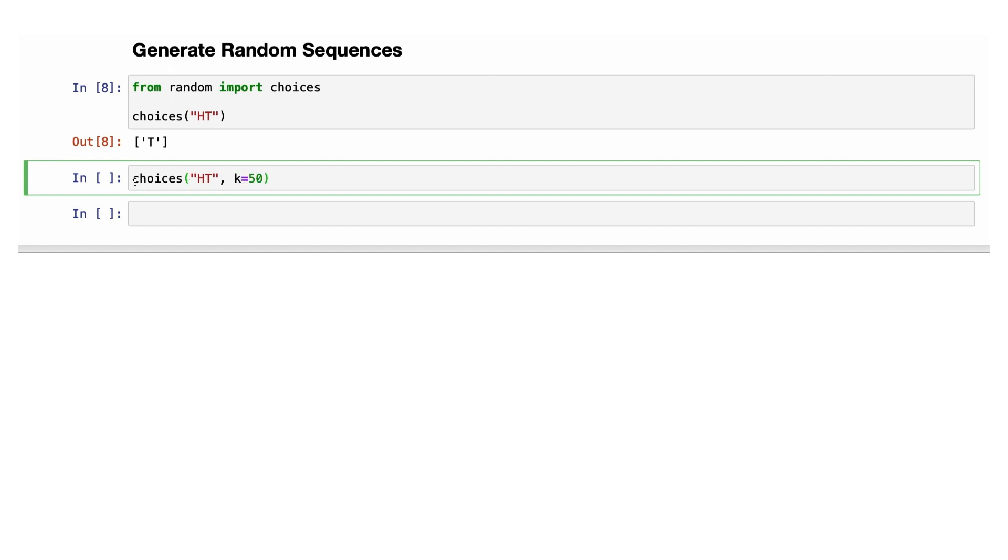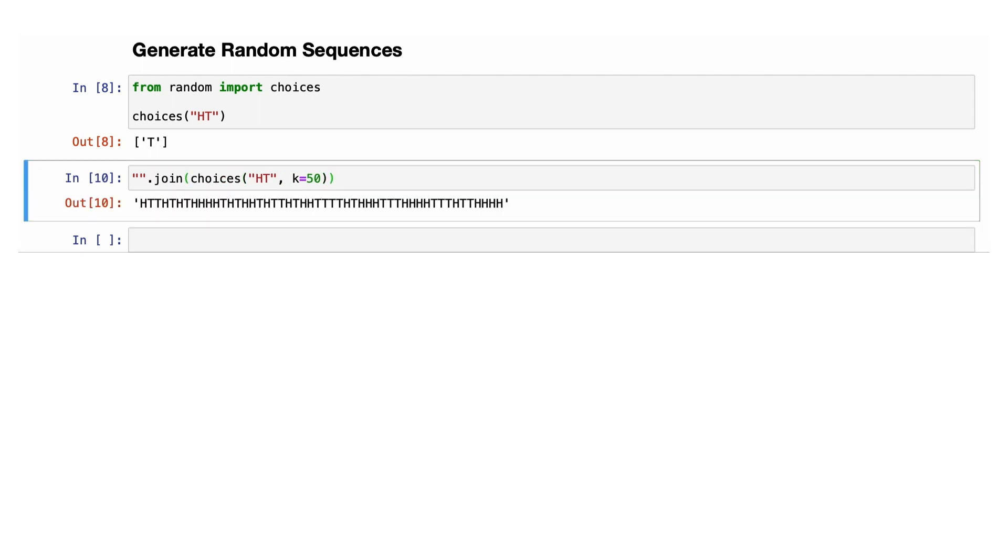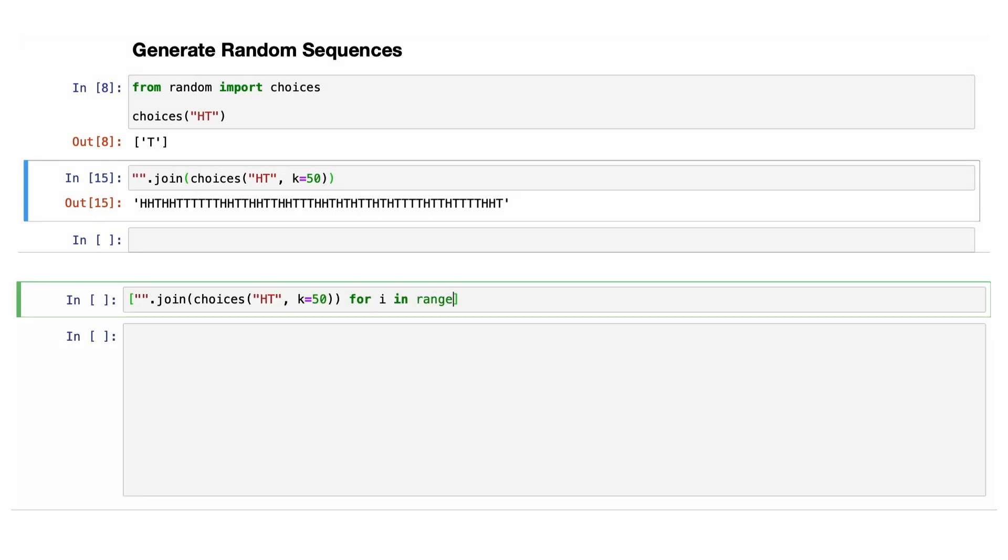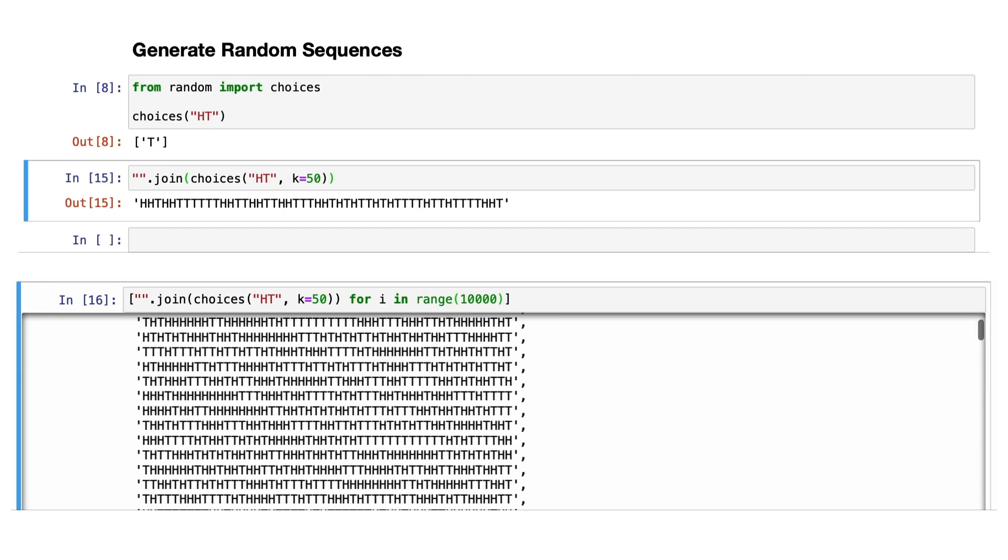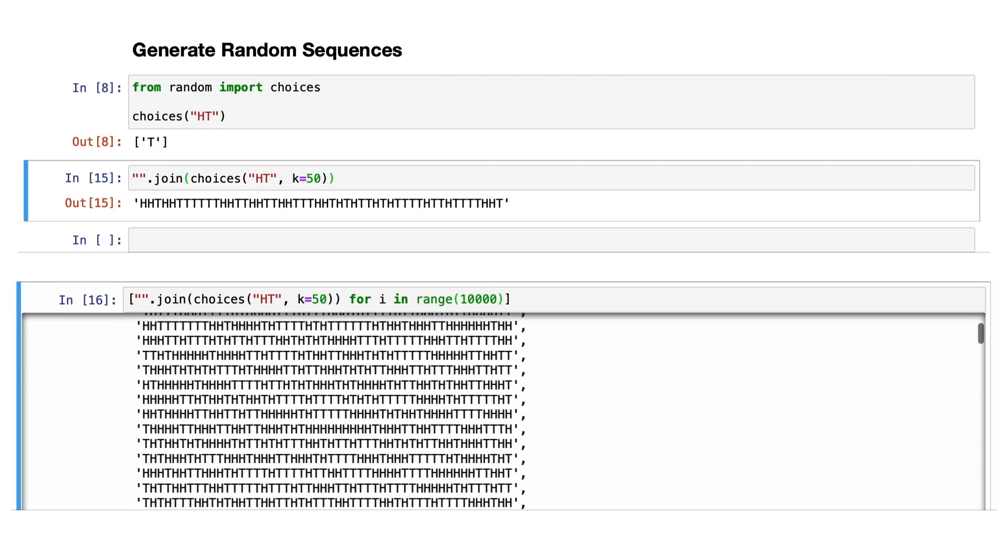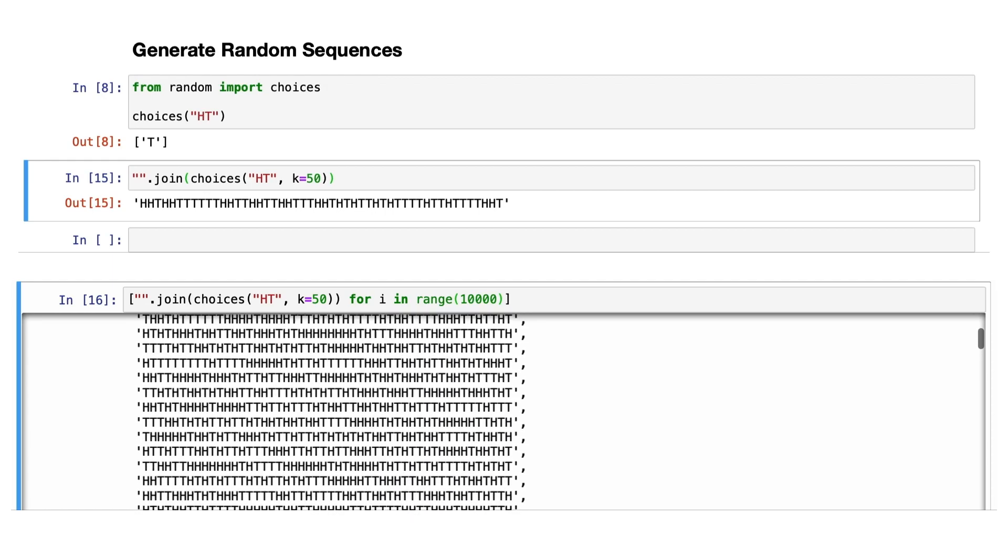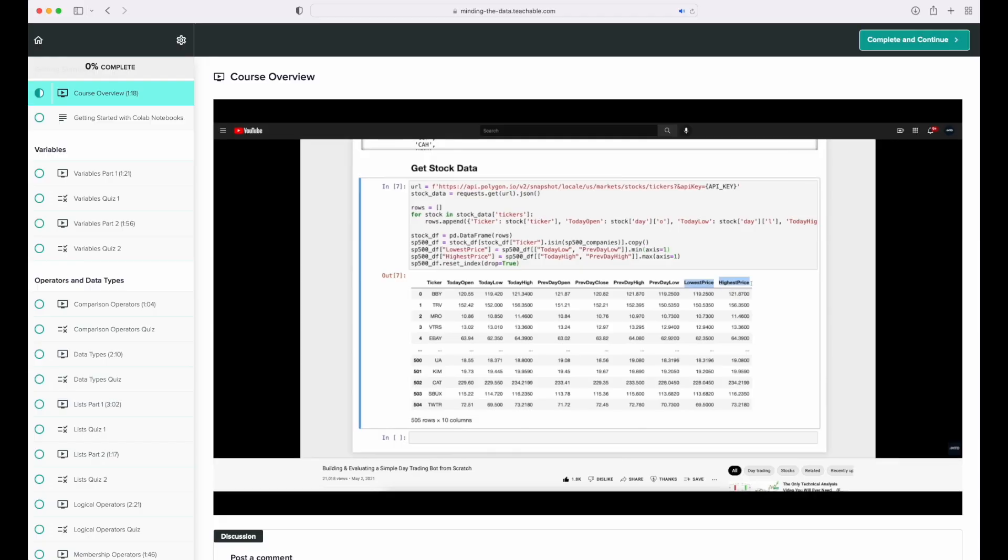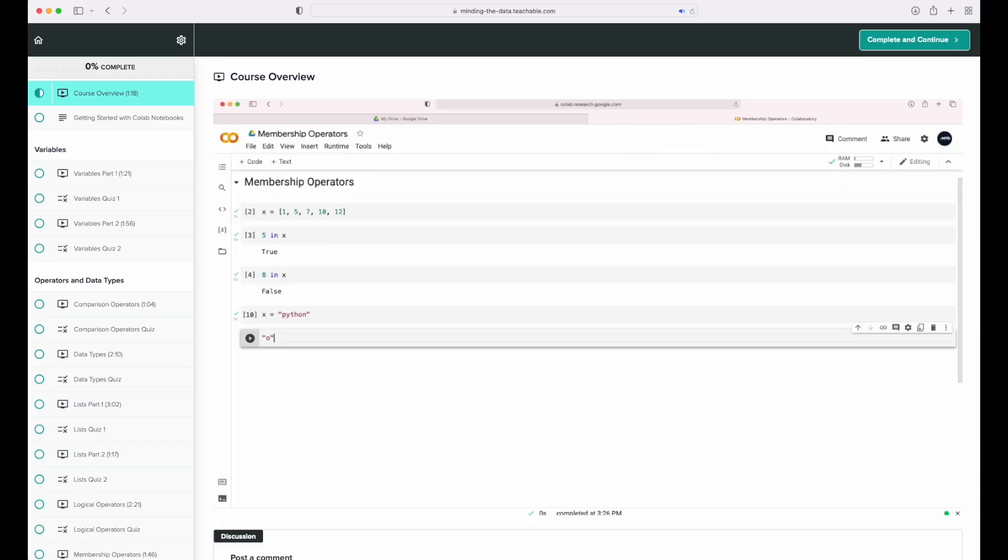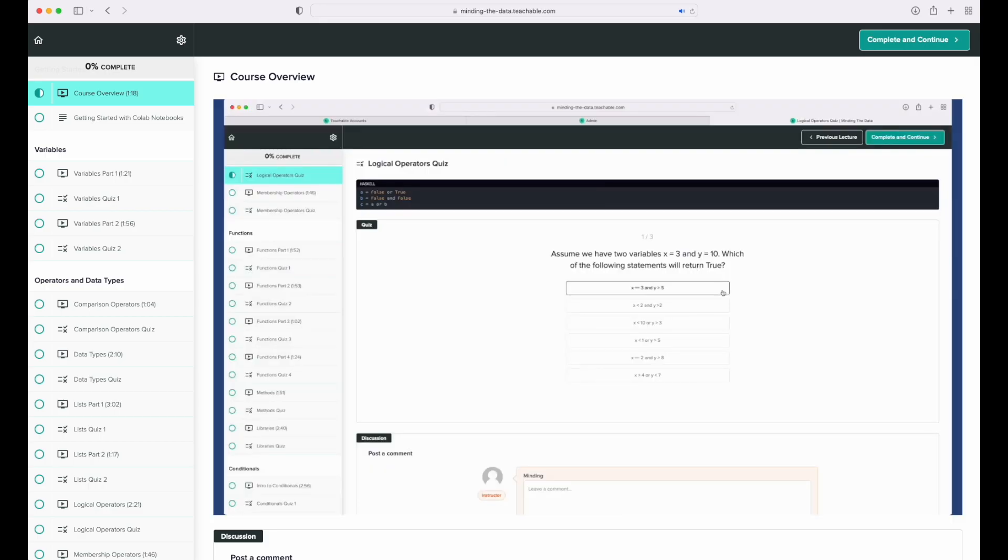In our case, we're going to use a k value of 50. Then we're going to join all these choices together. So now we can get a random sequence of coin flips each time that we run this code. Lastly, we can just repeat this process a bunch of times to get us 10,000 simulated sequences in under a second. This is where learning to program is extremely helpful, so that we don't have to actually flip a coin hundreds of thousands of times to get this data. I actually just finished a free intro to programming course that teaches you the basics of coding in Python. So I'll leave a link in the description if you're interested in checking that out.